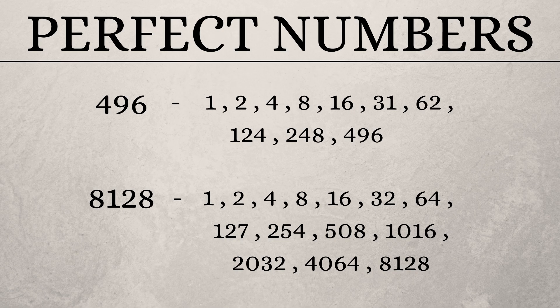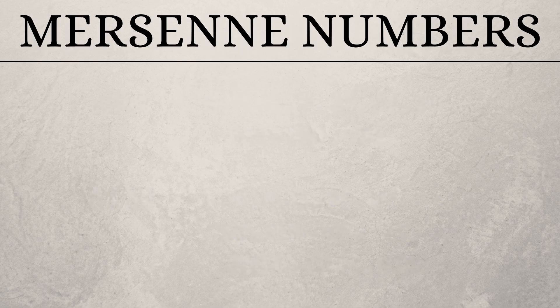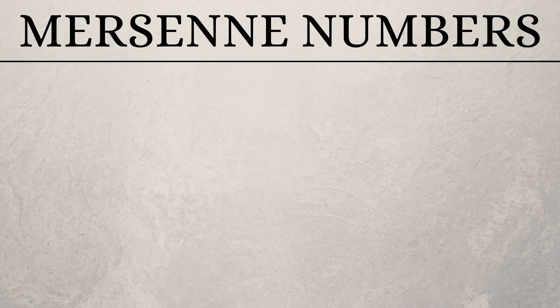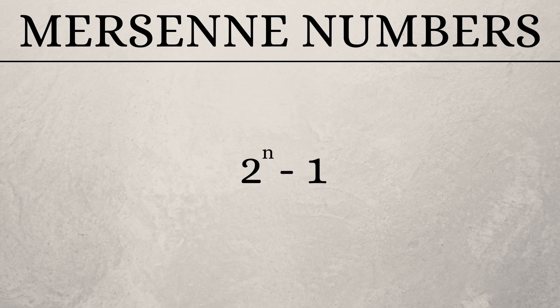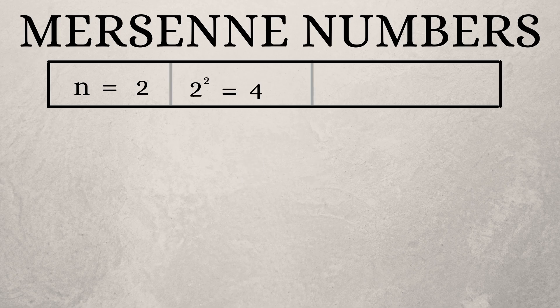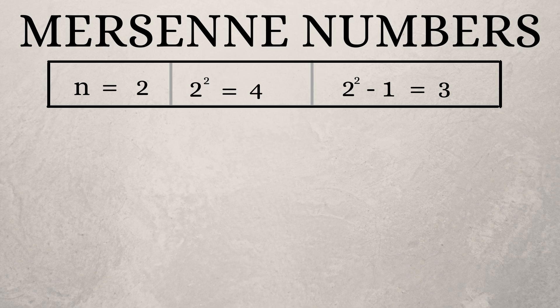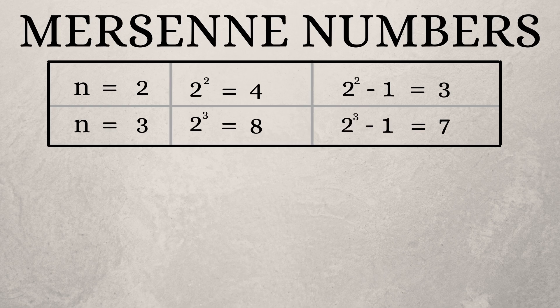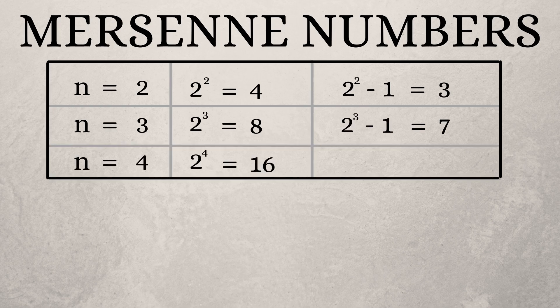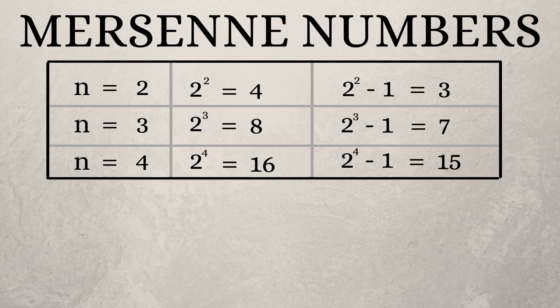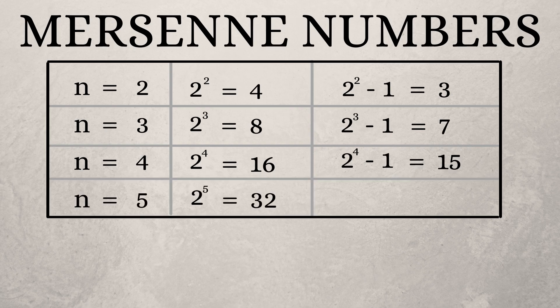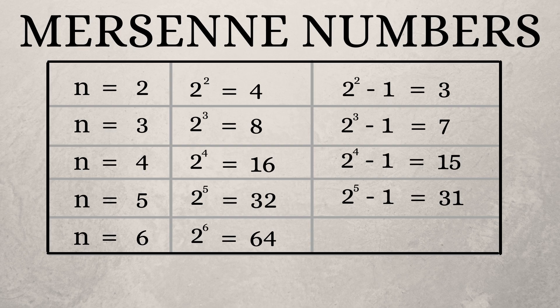Now, let's see another set of special numbers called Mersenne numbers. For any number n, the value of 2 to the power of n minus 1 is a Mersenne number. So, when n is equal to 2, 2 to the power of 2 minus 1 will be 3. When n is equal to 3, 2 to the power of 3 minus 1 is 7. When n is equal to 4, 2 to the power of 4 minus 1 is 15. Similarly, the Mersenne number for n equal to 5 is 31. When n is equal to 6, the Mersenne number is 63.